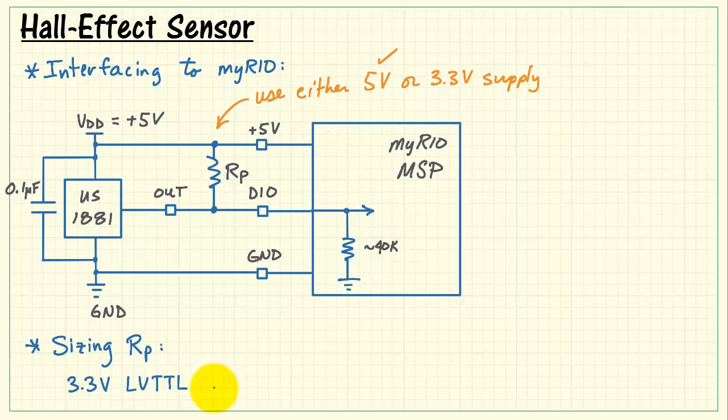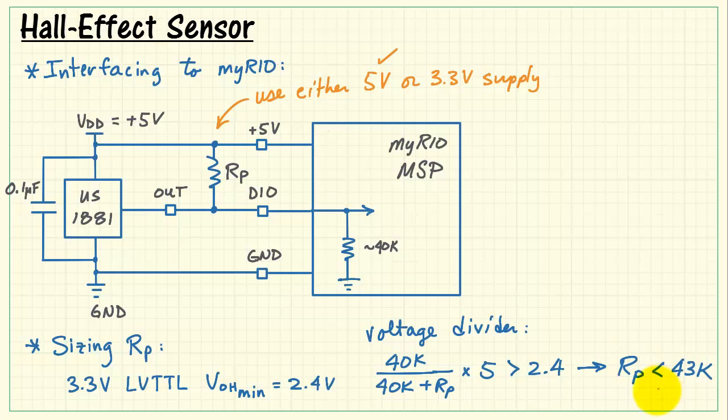Now, to get the appropriate size for the pull-up resistor, we recognize that the digital I.O. has the 3.3 volt low-voltage TTL standard. That tells us that our device must produce a minimum of 2.4 volts to be recognized as a high level. Now, everything that I just charted out here looks like a two-resistor voltage divider. Here's the equation for the 5 volt source, and that needs to be more than 2.4 volts. Solving that, we find that the pull-up needs to be less than 43k. 10k is a fairly convenient number, so I'll go ahead and recommend that value.